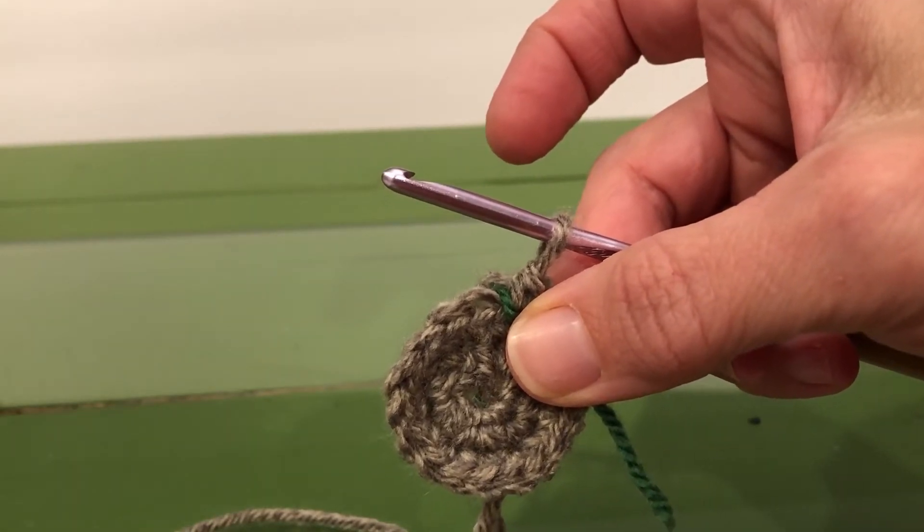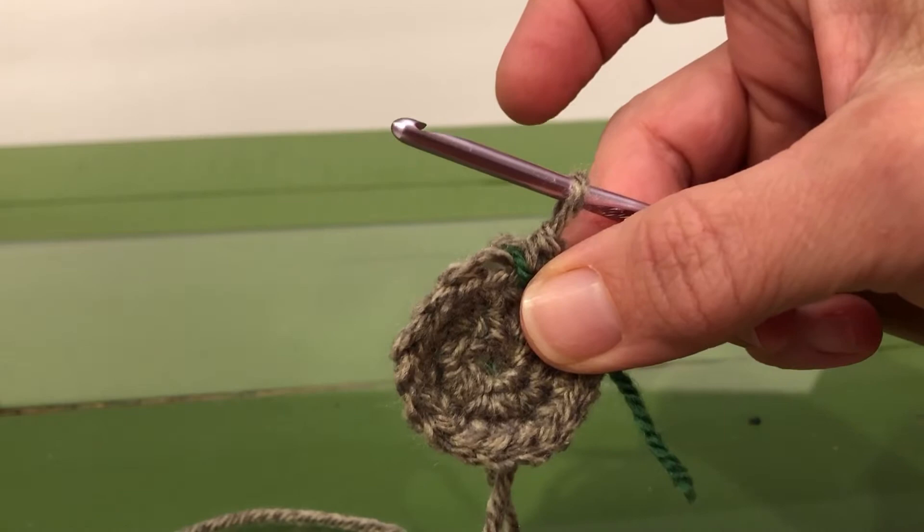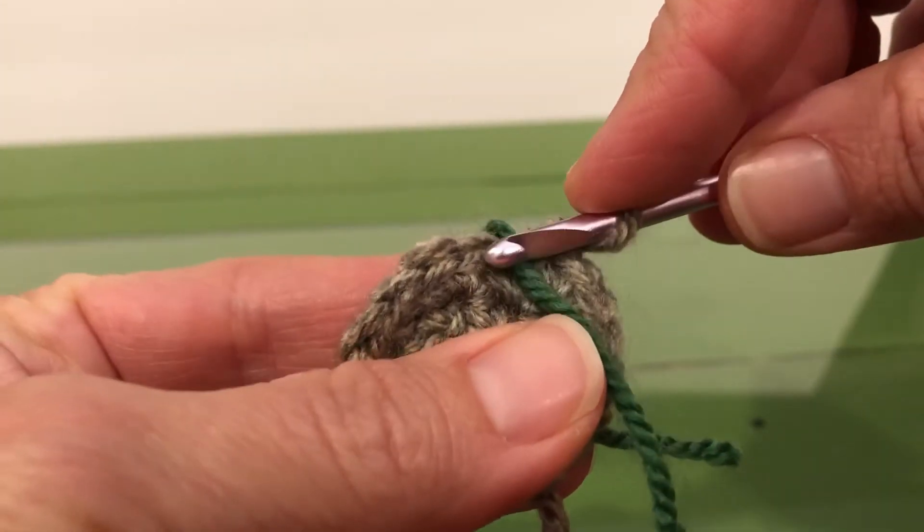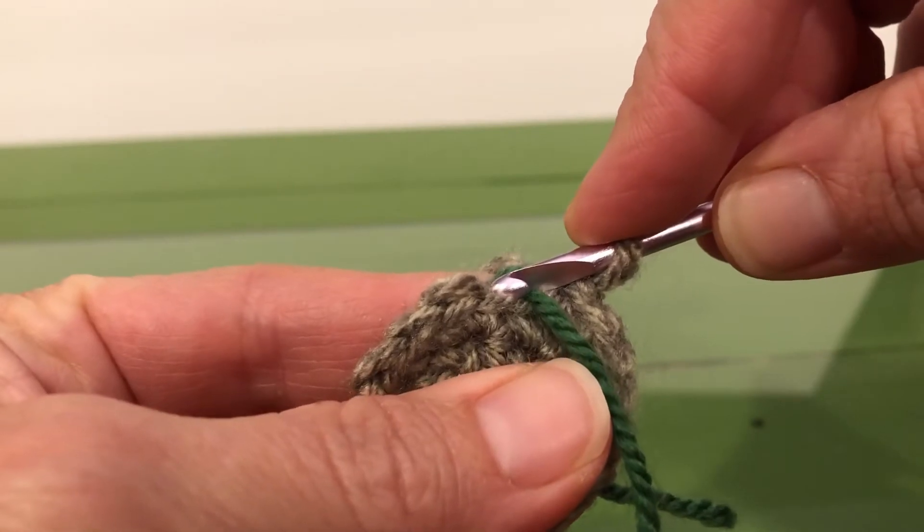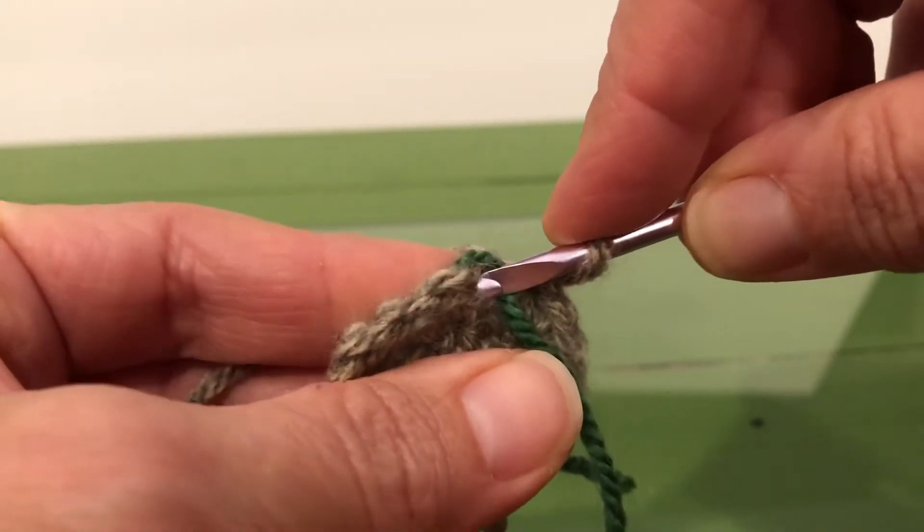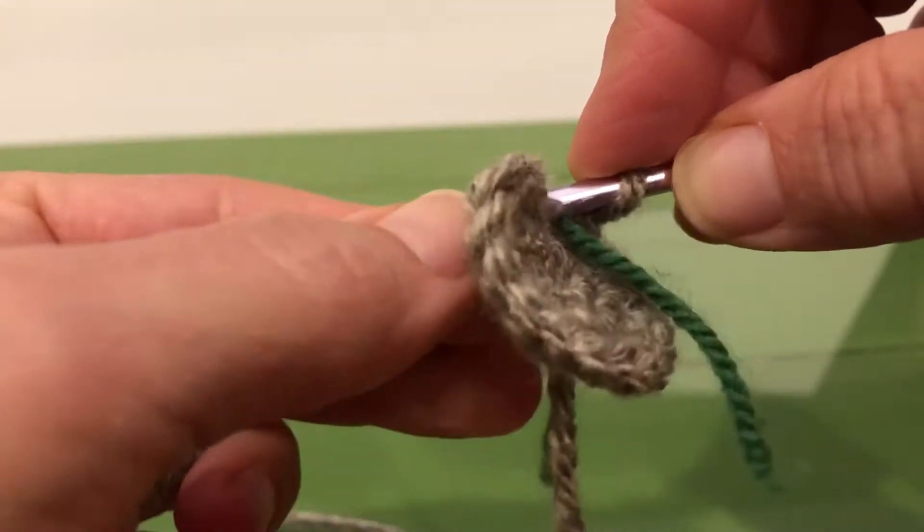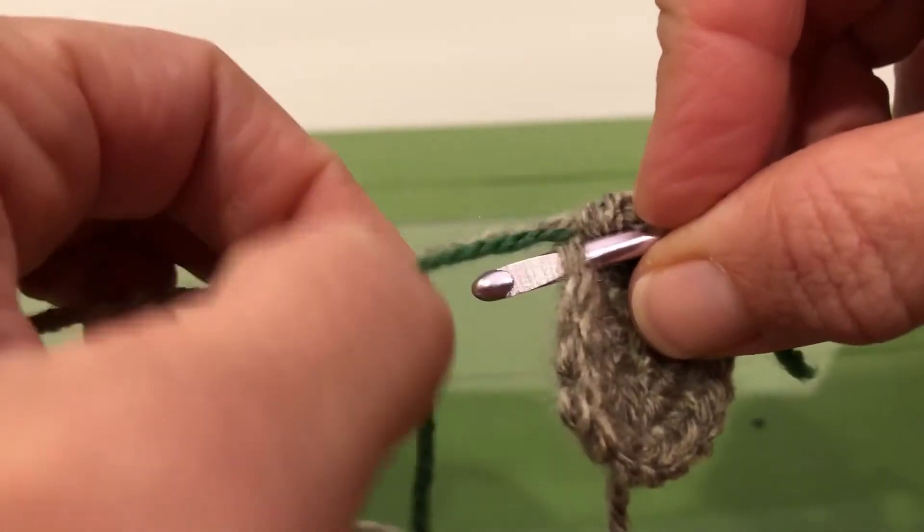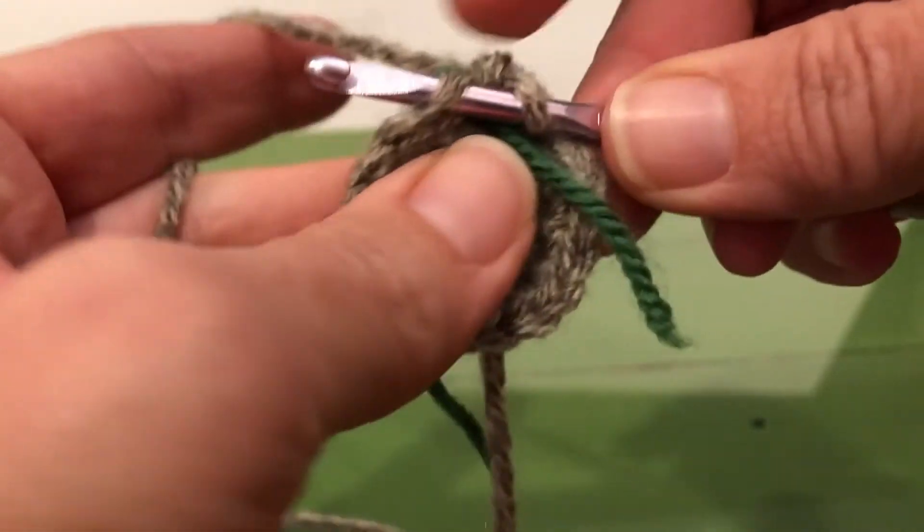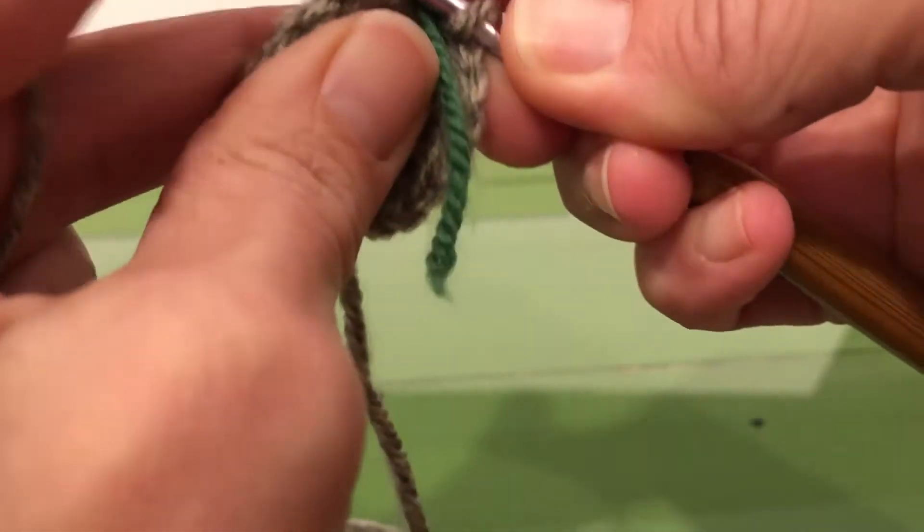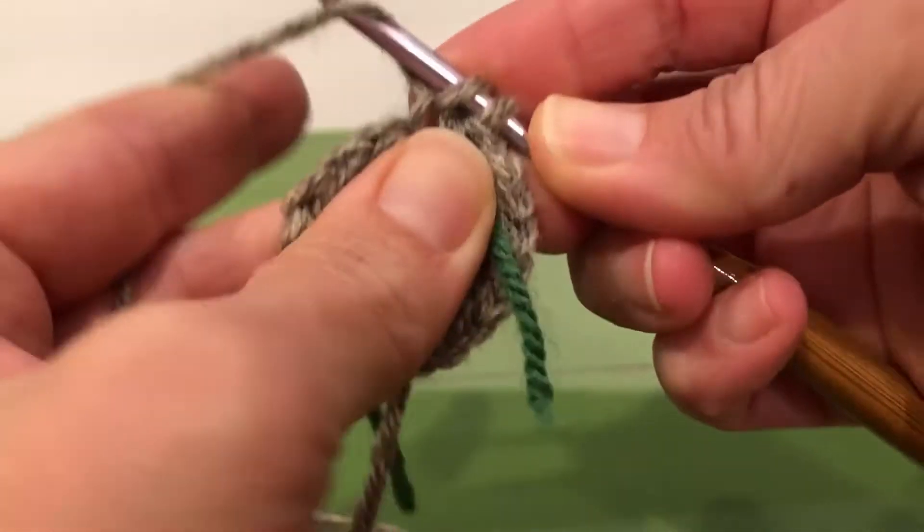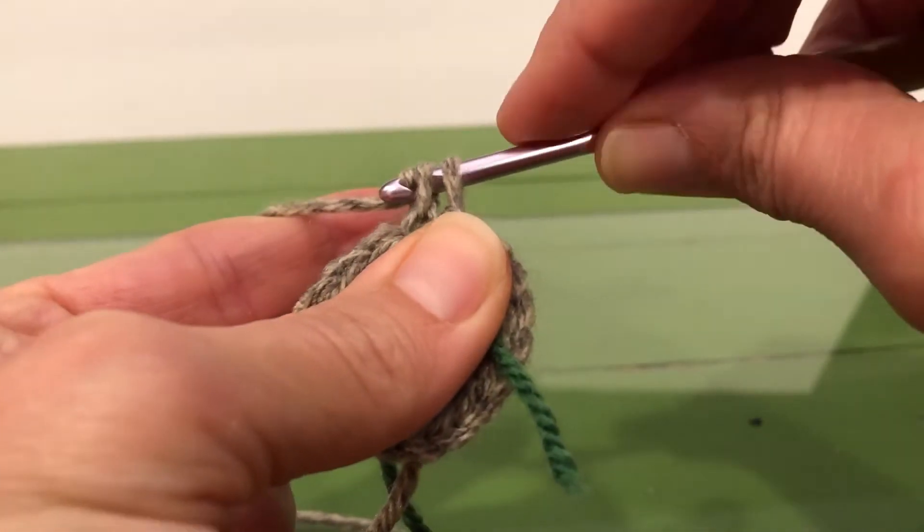Single crochet in each stitch around, and then move our marker. If you're looking at your stitch, here we are, this is the back, and this is the front. So we're going to single crochet in this back stitch only, whereas before we were pulling up both parts of the stitch, we only want the back. So we're going to go in, pull through, yarn over, and pull through both.